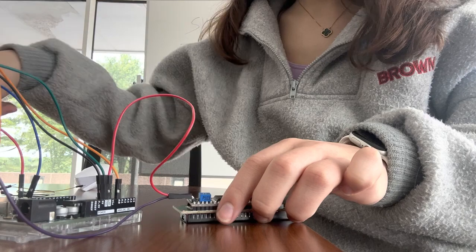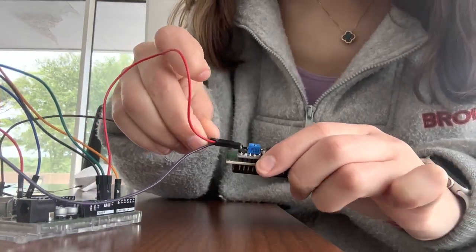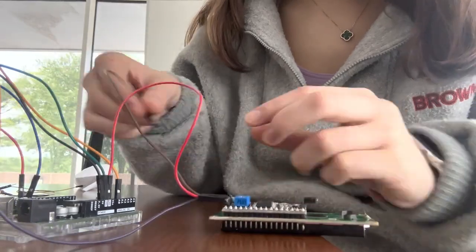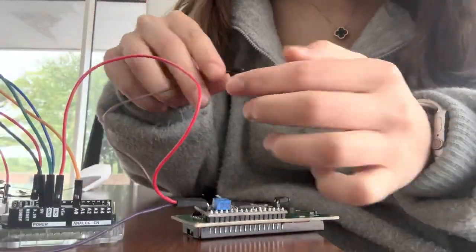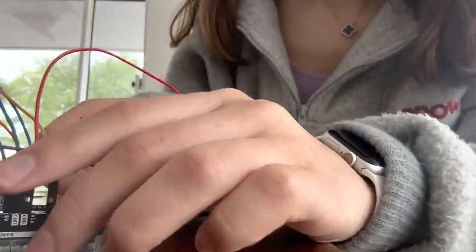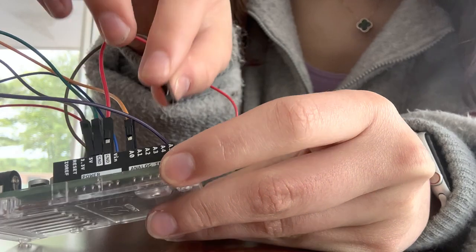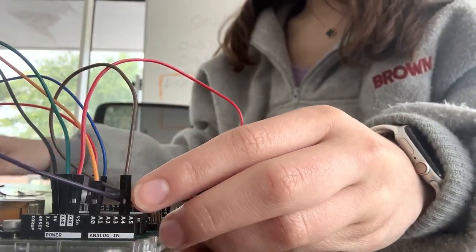Next, we have SDA, and we're going to connect it to A4, analog four, which is here on the analog side. It might be getting a bit tricky to find stuff now. Analog four over here. And lastly.